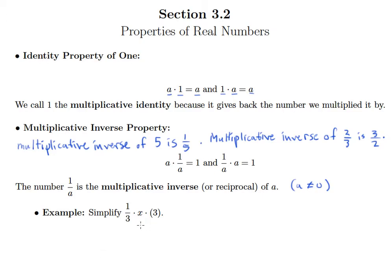So we can see that at work here in this example. 1/3 times x times 3. Well, it looks like we have two numbers that are inverses of one another, but they're not next to each other.